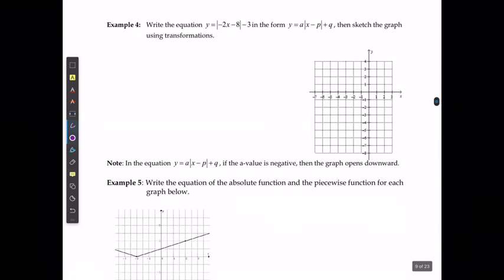For example 4, it wants us to write the equation y equals the absolute value of negative 2x minus 8 minus 3 in the form of y equals a bracket x minus p plus q, and then sketch the graph using transformations.